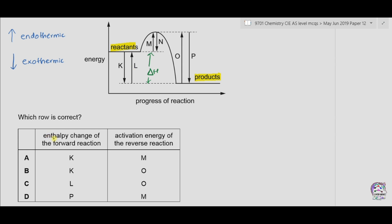Coming to the options, we have to find the enthalpy change of the forward reaction. We can see that the reactants have higher energy compared to the products, so when converting reactants into products, energy is released. Therefore K is the enthalpy change of the forward reaction, so A and B could be possible options.